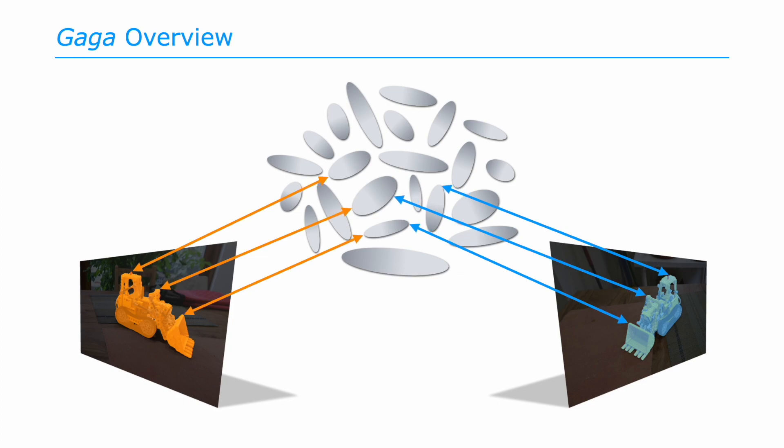We splat all 3D Gaussians onto the camera frame given the camera pose of each input image. Subsequently, for each mask within the image, we identify which 3D Gaussians are projected within that mask.